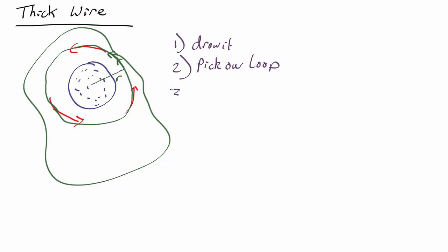and then we get to stage three, use Ampere's law. Ampere's law tells us that the line integral around our loop of the magnetic field dot the line element dL